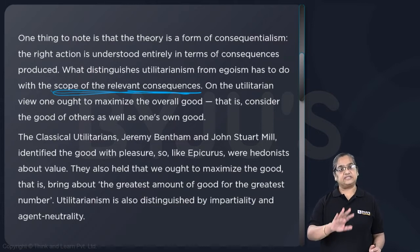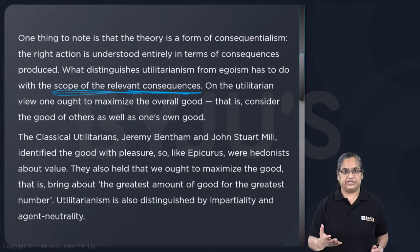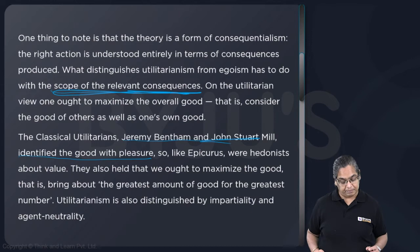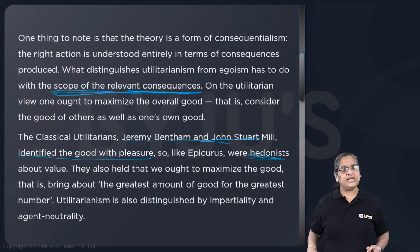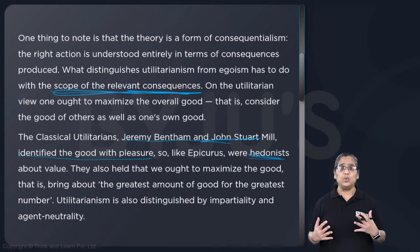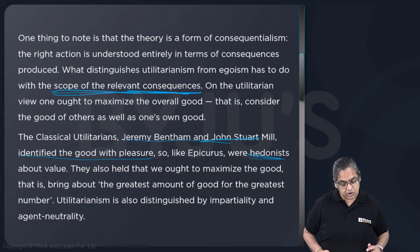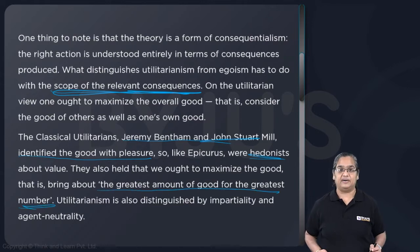That gives you an idea of what utilitarianism is. Now we go on to the utilitarians — the people who propagated this theory. The classical utilitarians, Jeremy Bentham and John Stuart Mill, identified the good with pleasure, and so, like Epicurus, were hedonists. A hedonist is one who believes that the purpose of life is the pursuit of pleasure. They also held that we ought to maximize the good — bring about the greatest amount of good for the greatest number of people.